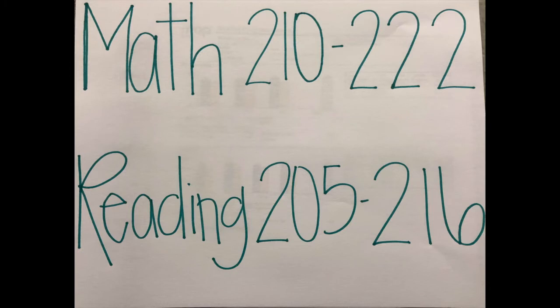For math, Ms. Klein is showing you — we want your students to perform between the score of 210 and 222. And for reading, we would like for your students to score between 205 and 216. That shows that your student is performing on average. If your students are performing lower than those averages, then we have some suggestions for you. And if they are scoring higher, then they are on track for passing the milestones.